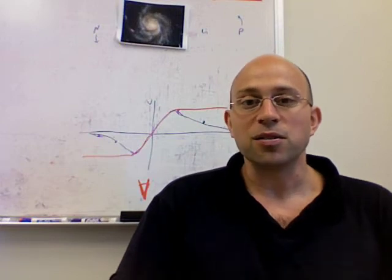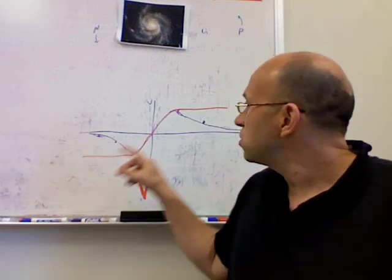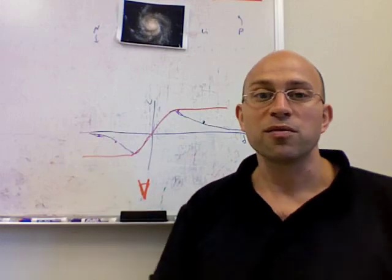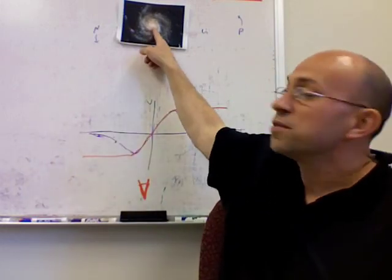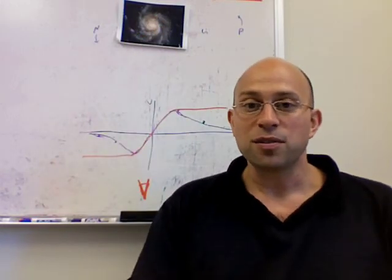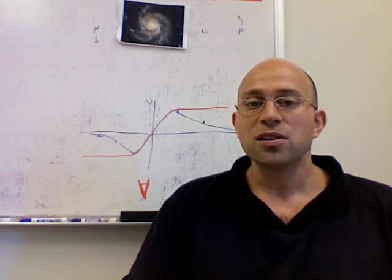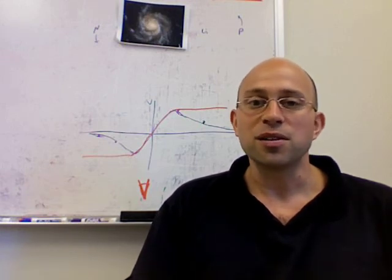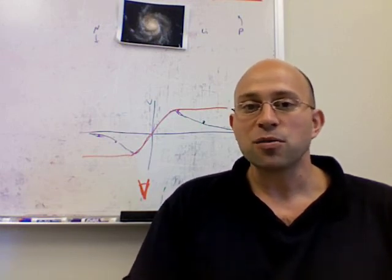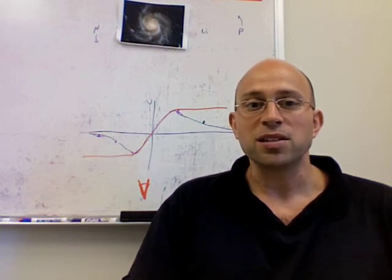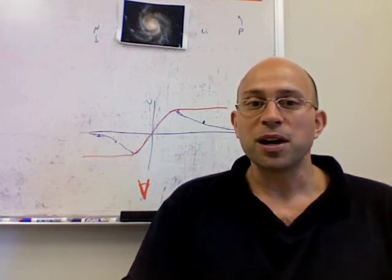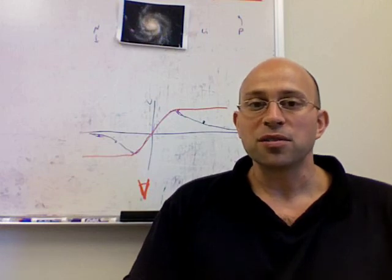Now, dark matter. We can also use this rotation curve to look at the total amount of mass. And even in the center where there's a lot of light, it turns out that there's more mass than you would guess just based on looking at how much light there is, inferring how many stars it corresponds to, and knowing the mass of a typical star. So we conclude that there's dark matter everywhere throughout this galaxy.